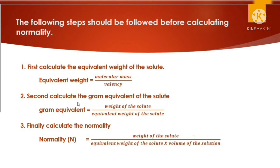The second step is to calculate the gram equivalent weight of the solute. If you know the weight of the solute and the equivalent weight of the solute, it is possible to calculate the gram equivalent weight. Finally, normality — expressed by capital N — is calculated as weight of the solute divided by equivalent weight of the solute multiplied by volume of the solution. This volume should be in liters.